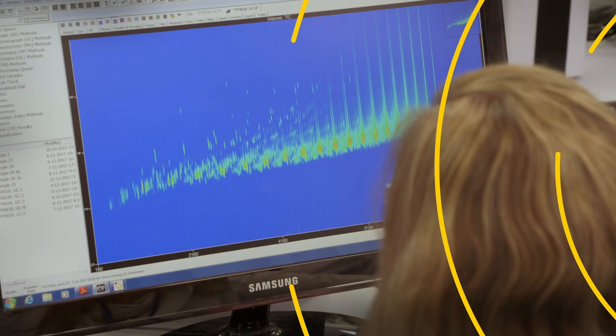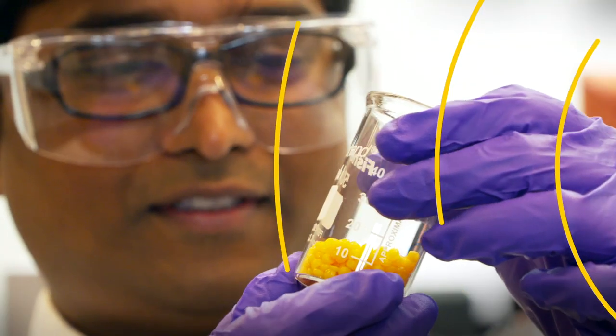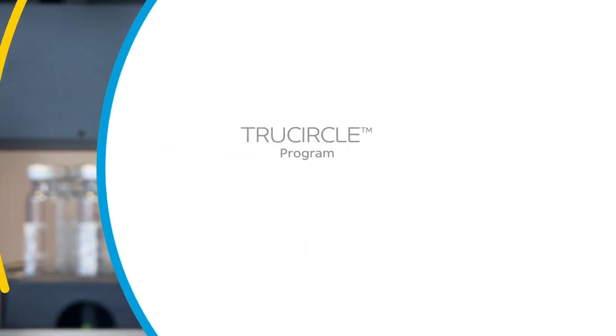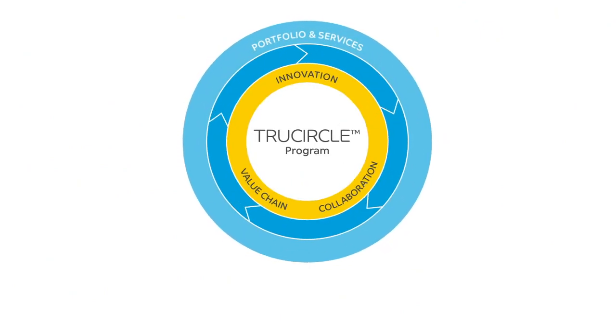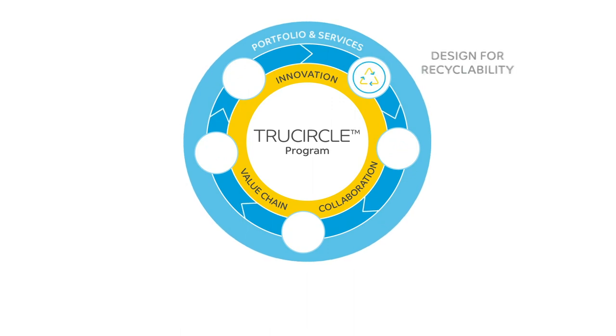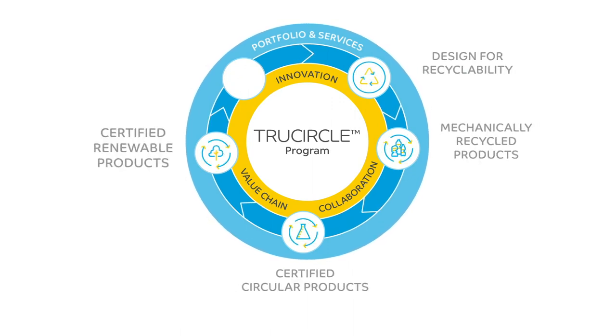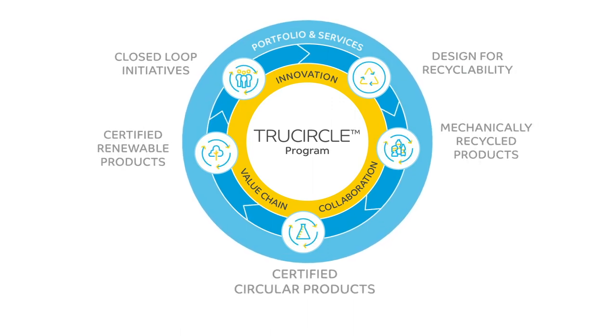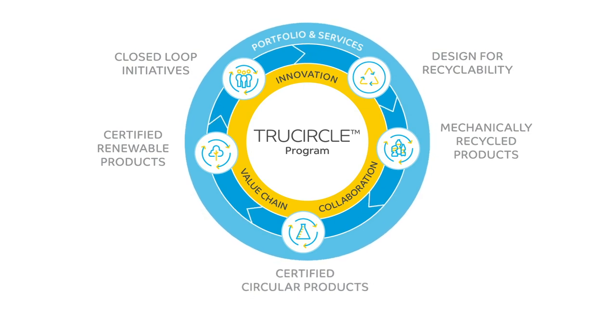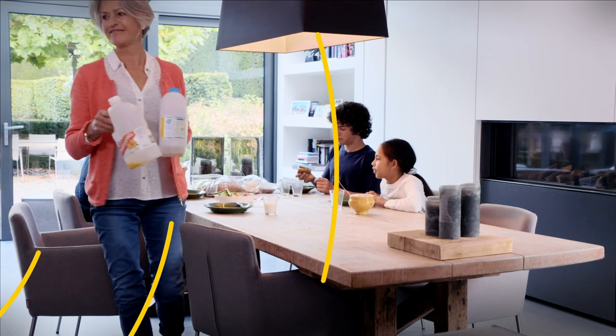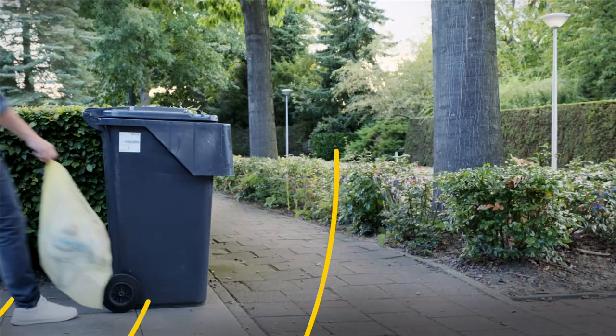At SABIC, we are collaborating to create new circular solutions under our TrueCircle portfolio. Through pioneering processes, new technology, and innovation, SABIC was the first to commercialize certified circular polymers made via advanced recycling of post-consumer plastics.